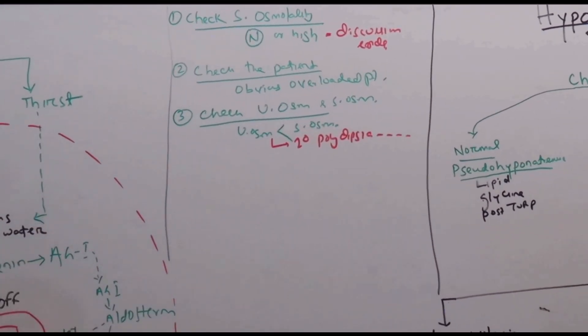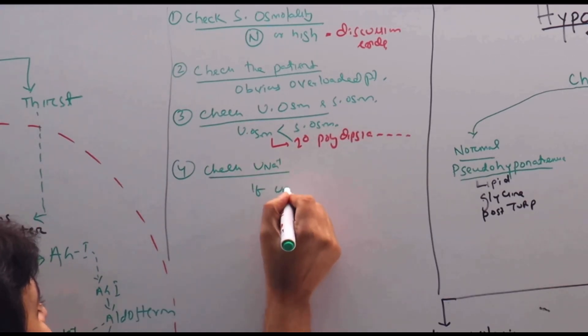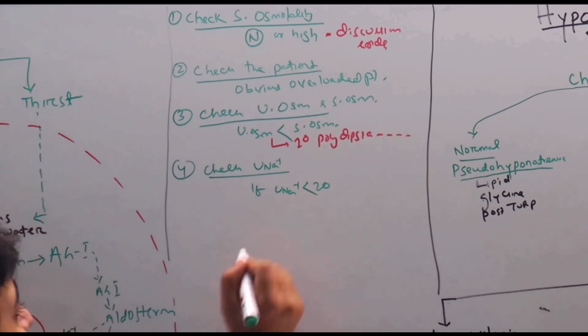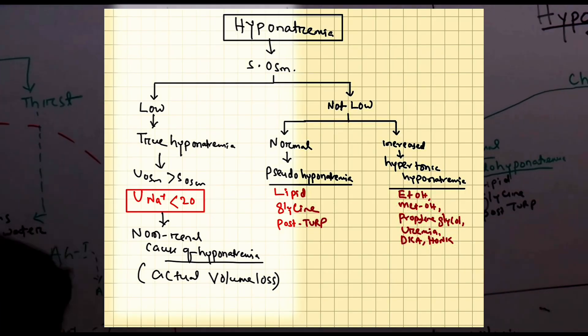Fourth step is check urine sodium. If urine sodium is less than 20, then we have only one diagnosis that is non-renal cause of hypovolemia.